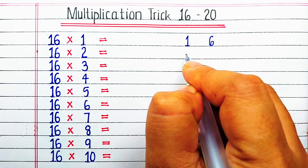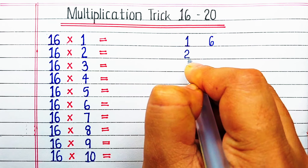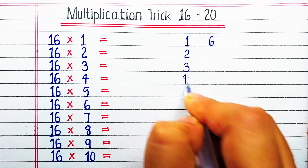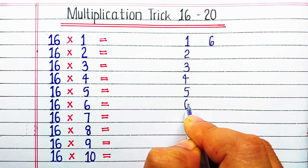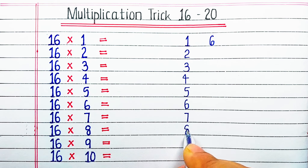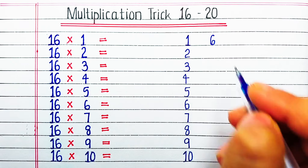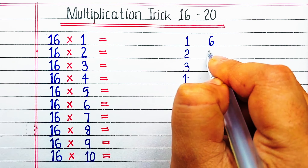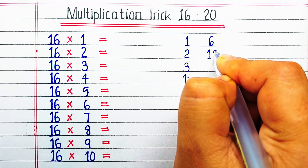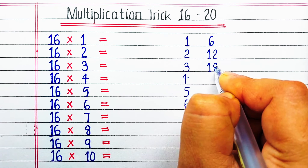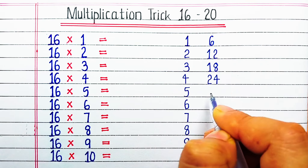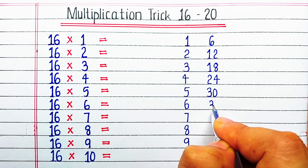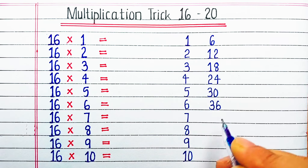First we will write the table of 1: 1×1=1, 1×2=2, 1×3=3, 1×4=4, 1×5=5, 1×6=6, 1×7=7, 1×8=8, 1×9=9, 1×10=10. Then we will write the table of 6. If you want to learn the trick for the table of 6, the link is in the description box as well as in the 'i' button.